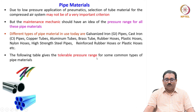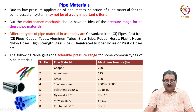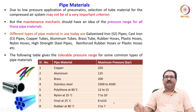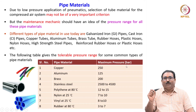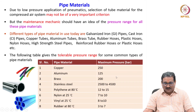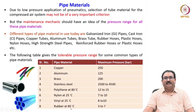The following table gives the tolerable pressure range for common pipe materials. Copper pipe can withstand up to 250 bar; aluminum, 125 bar; brass, 200 bar; stainless steel, 2500 to 4500 bar. Nylon can handle 7 to 10 bar; vinyl, 8 to 10 bar; rubber at 80°C, 3 to 7 bar. The key point is that each pipe and tubing material has a maximum pressure range it can withstand.